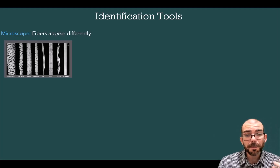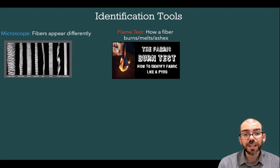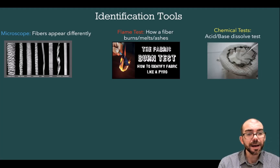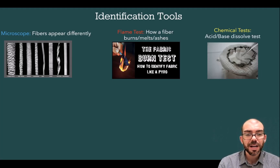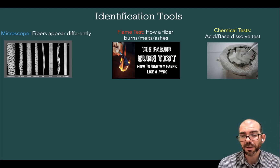The primary identification tool is the microscope. Looking at a fiber under the microscope, different fibers have unique patterns that we can quickly learn to identify what kind of fiber we've discovered. Another tool is a flame test — by burning the fiber, we can record how it burns, melts, ashes, or smells, and that gives us insight into what kind of fiber we've discovered. Chemical tests involve applying a strong acid or strong base; different fibers react in different ways — some dissolve in acid, some don't.